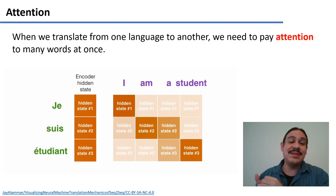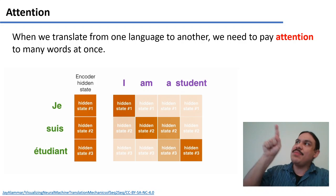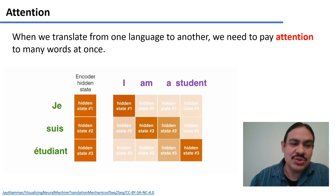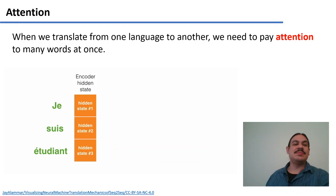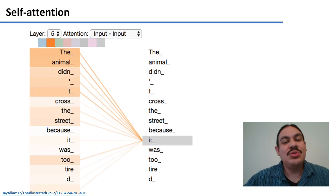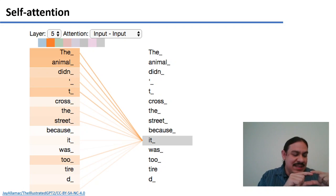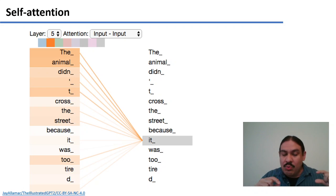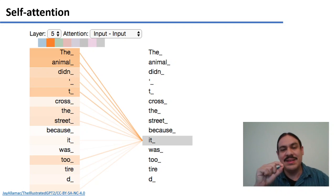You'd also be freed from the constraint that you need to have a one-to-one relationship, because then you'd have vectors that map the end-to-end relationship between a word and its translation. You could also have self-attention, where if you have a sequence of tokens or words, you could try to decide which of the words is getting the most input from other hidden states.